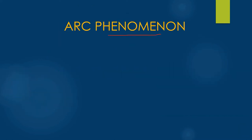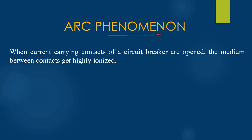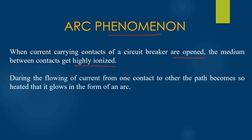Arc phenomena. When a fault occurs, the two contacts of the circuit breaker get separated from each other, and that's how the faulty current is interrupted from flowing into the system. But it's not that simple — when the two contacts of the circuit breaker are separated or opened, the medium between the two contacts gets highly ionized. When the two contacts are separated, the contact area between them decreases, which leads to increased current density and rise in temperature. This rise in temperature produces a large amount of heat, and therefore the low resistive part between the two contacts becomes so heated that it appears in the form of an arc.